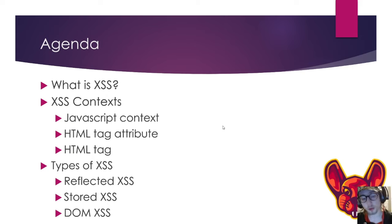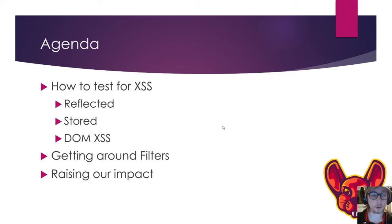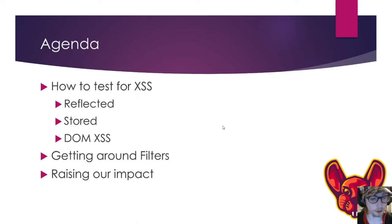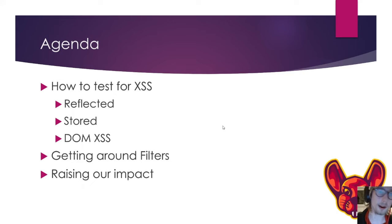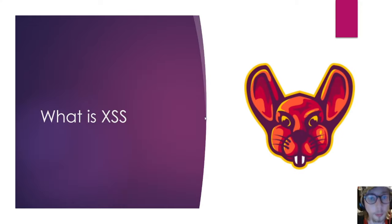We'll talk about the types of cross-site scripting. We'll only go over reflected, stored, and DOM in this video. I know there are a lot more, but I advise you to do your own research on those. We'll also talk about how to test for cross-site scripting — that's the most important part — and how to get around filters. We'll also talk about raising your impact, because if you're unable to do that, it's not even useful to look for cross-site scripting.